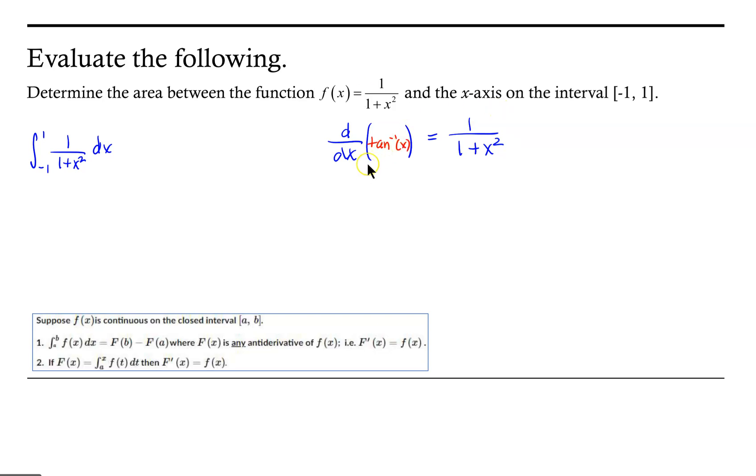So, the derivative of the inverse tangent function is 1 over 1 plus x squared. So, the antiderivative of 1 over 1 plus x squared should equal the inverse tangent of x. Now, we're going to evaluate that function between x equals negative 1 and x equals 1.